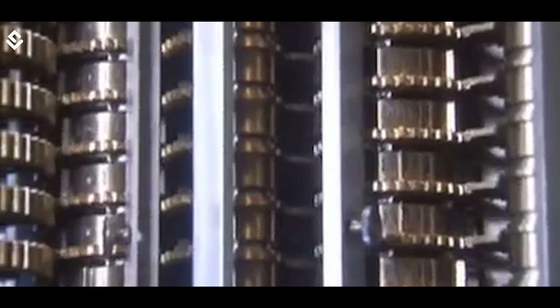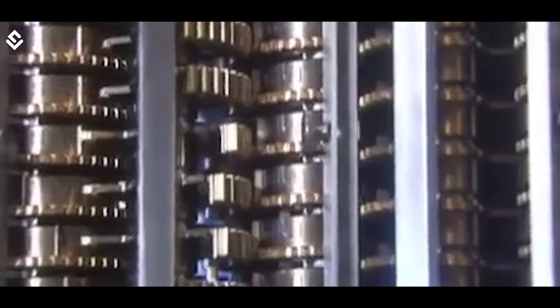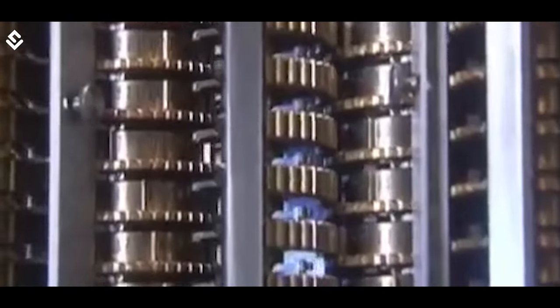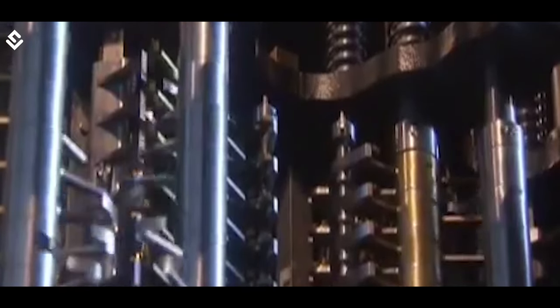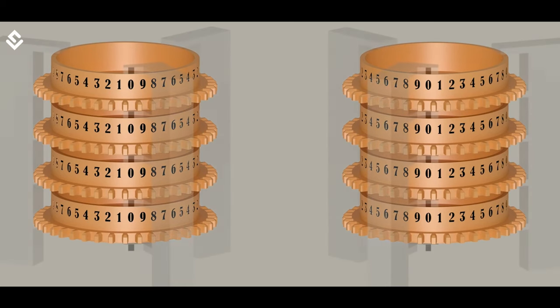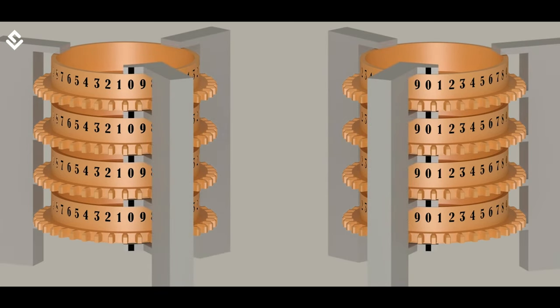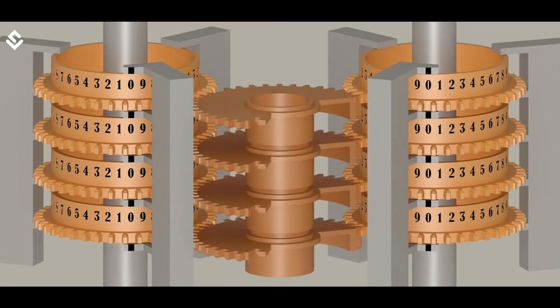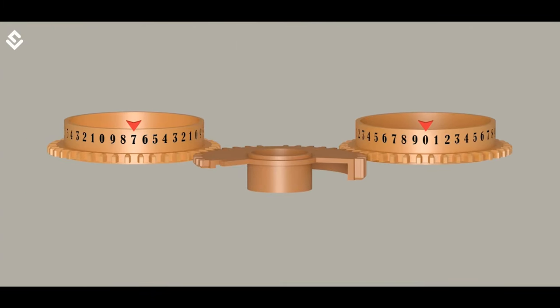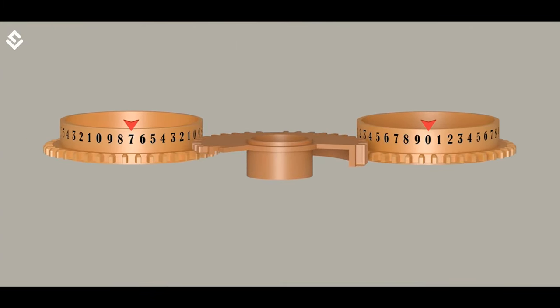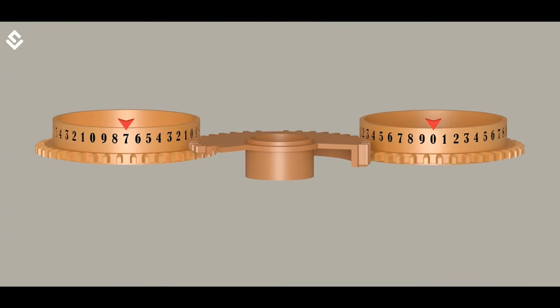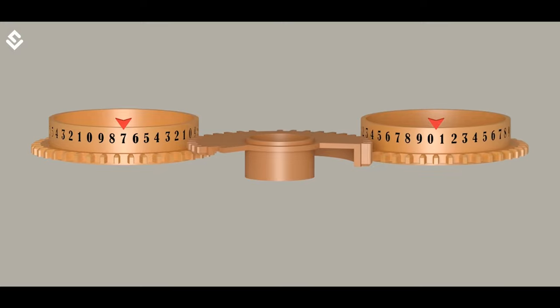For example, one complete rotation of the main shaft in a difference engine designed by Charles Babbage was equal to one full set of addition. The engine consists of several columns numbered from 1 to n. Each column stores exactly one decimal number. The machine adds the value of column n plus 1 to column n to produce the new value of n.